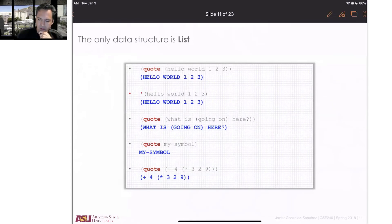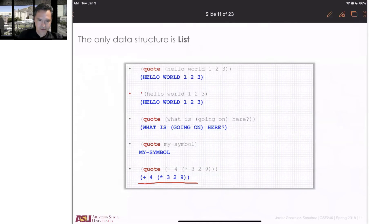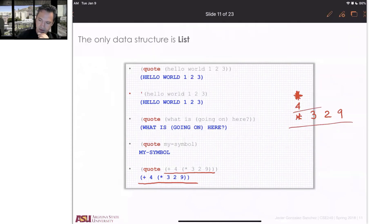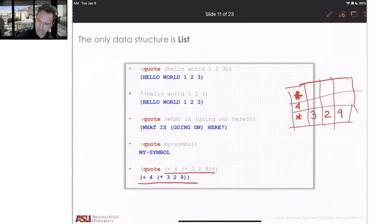My last example: why is this the result? When you put quote, you are telling Lisp: what I am going to give you is not an instruction, it is information. After quote, I have the plus as one element, four as the second element, then the asterisk, the three, the two, and the nine together — because they are in one parenthesis, so that group is one thing.